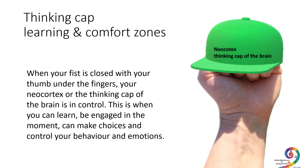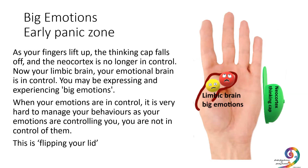It can help to think of your fingers wrapped over like an actual physical cap. Then the big emotions or the early panic zone: this happens as your fingers lift up and the thinking cap falls off, and the neocortex is no longer in control. Your thinking brain is not functioning as well and the limbic brain, or the emotional brain, is now in control. In this state you might be expressing and experiencing big emotions. When your emotions are in control, it's very hard to manage your behaviours — as your emotions are controlling you, you're not in control of them. This is flipping your lid, and you can see that the lid or the thinking cap has fallen off.